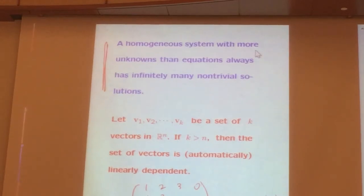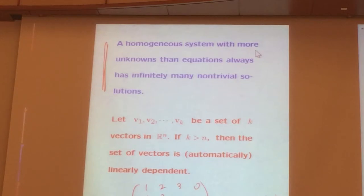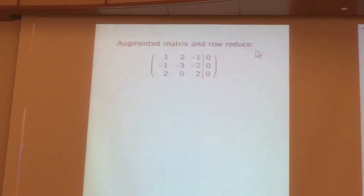Testing for independence and dependence basically produces a system of equations, so we're back to solving systems of equations. We mentioned this and did examples in section 5.4. If you have a homogeneous system of equations with more unknowns than equations, that always has infinitely many solutions.